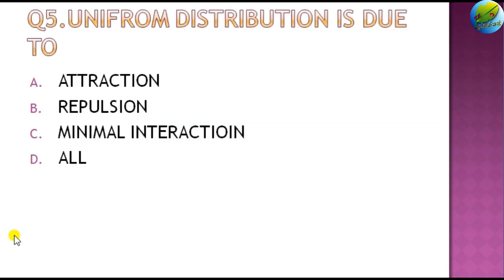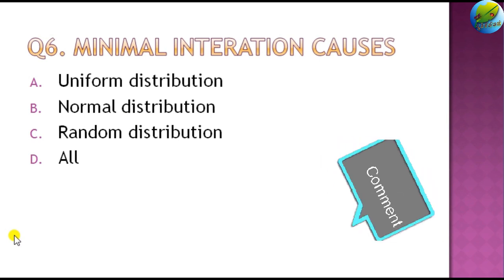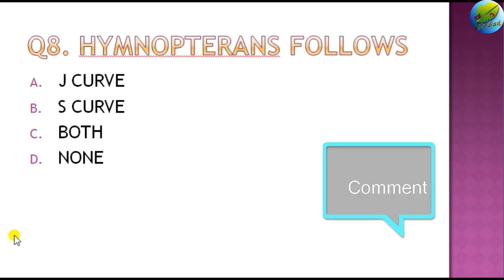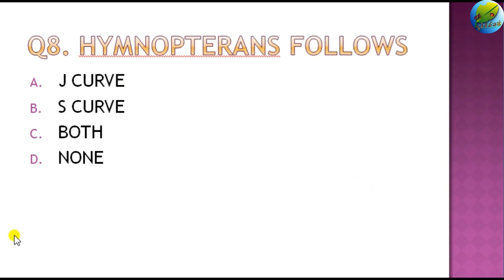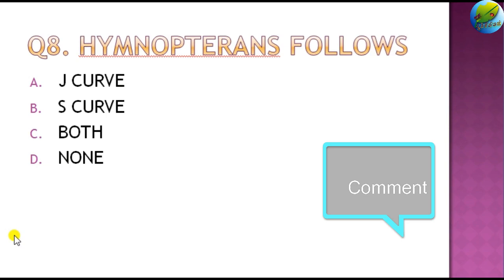Question 5: Uniform distribution is due to — attraction, repulsion, minimal interaction, or all of the above? Question 6: Minimal interaction causes — uniform distribution, normal distribution, random distribution, or all of the above? Question 7: R-strategist follows — J-curve, S-curve, both, or none? Question 8: Hymenopterans follow — J-curve, S-curve, both, or none?